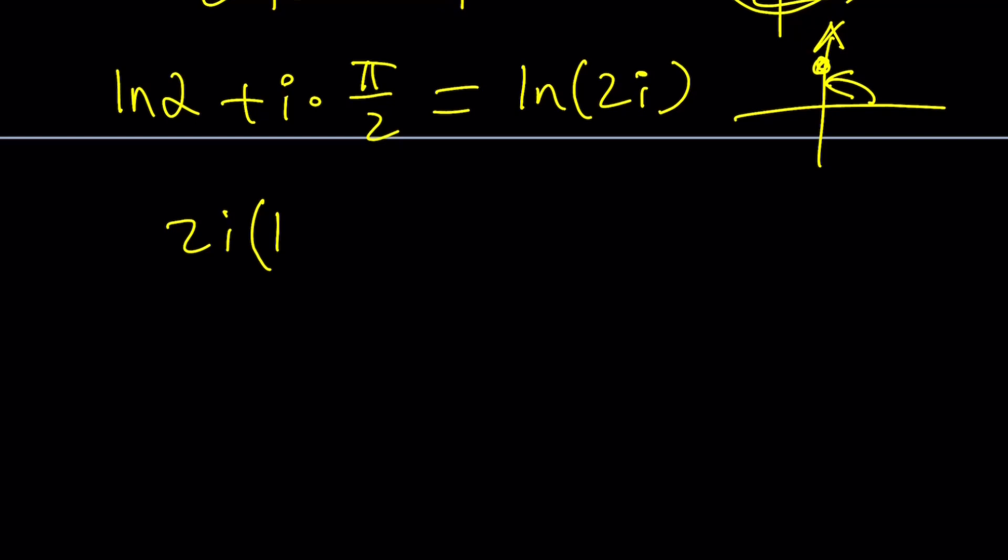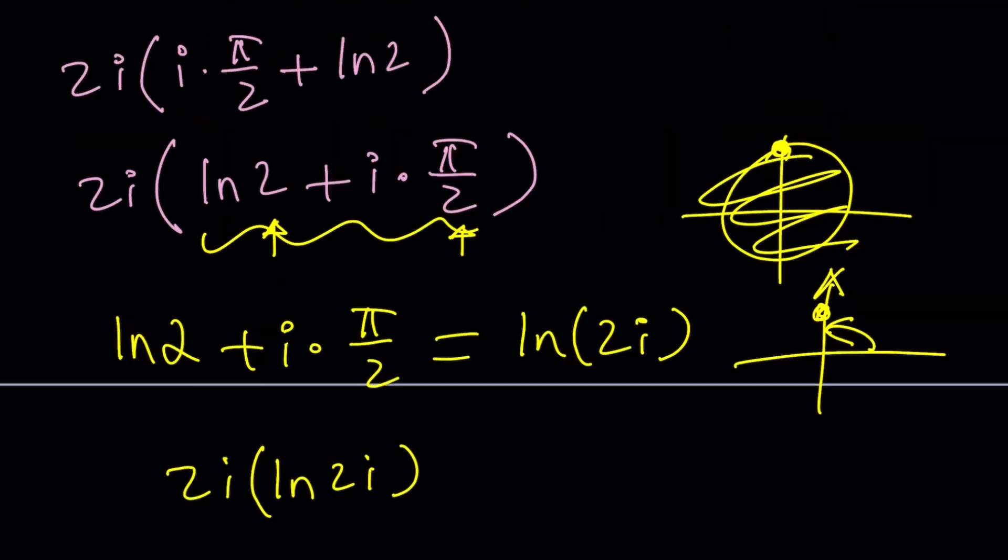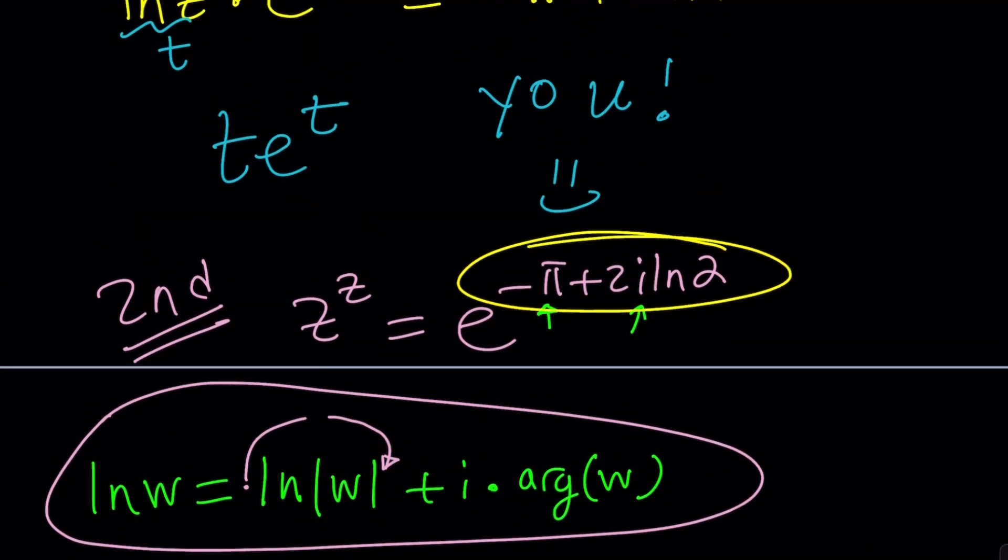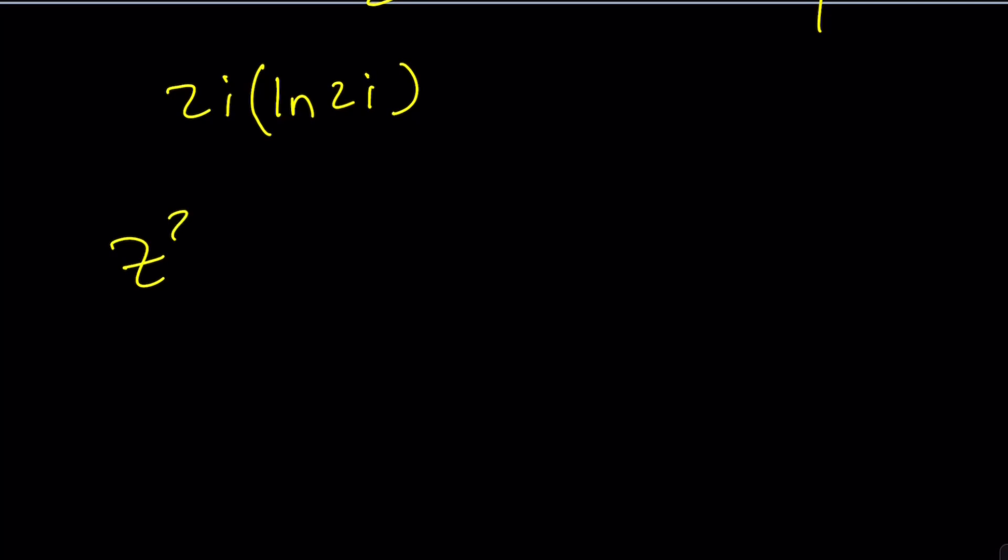2i is being multiplied by ln 2i. That's perfect. So 2i ln 2i equals the exponent i pi plus 2 ln 2. Where does that come from? From here. We have to put Z to the Z equals e to the this. 2i ln 2i, but the rest is fun.